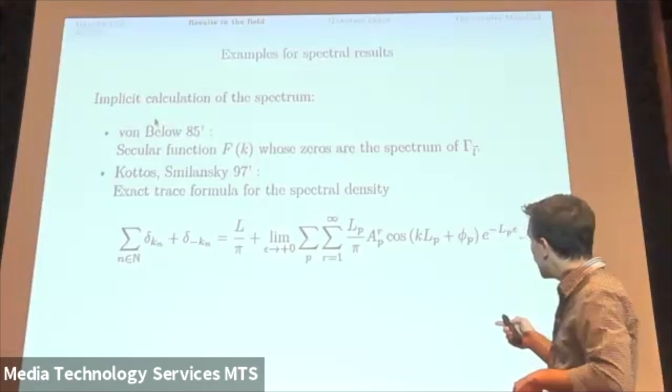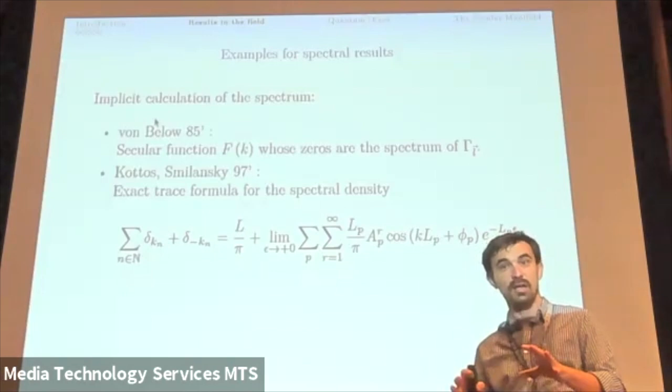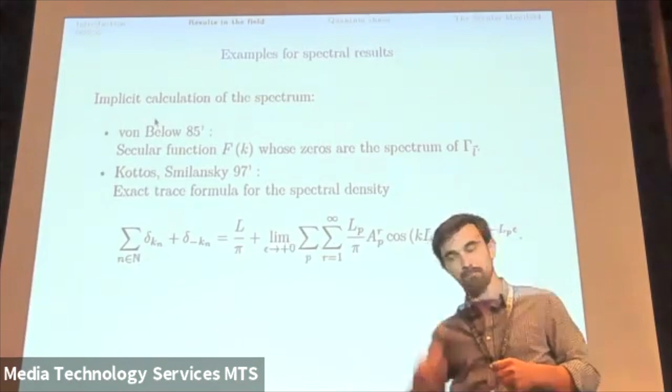And the main issue here is that it's exact, unlike the case for compact manifolds where we have a trace formula but it's not exact. It has some kind of an error which goes to zero when k goes to infinity. So here it's an advantage that it's exact.